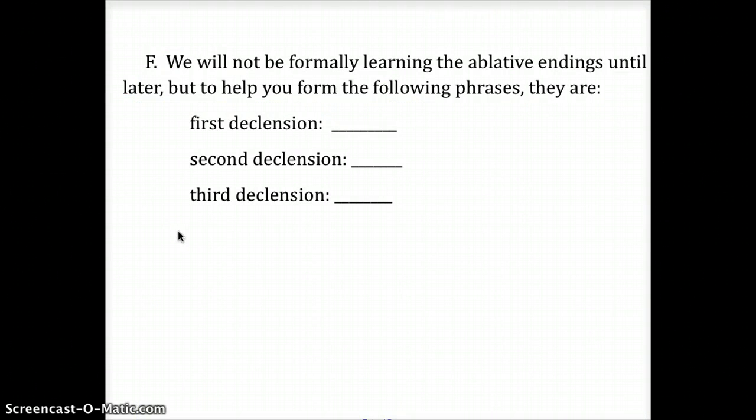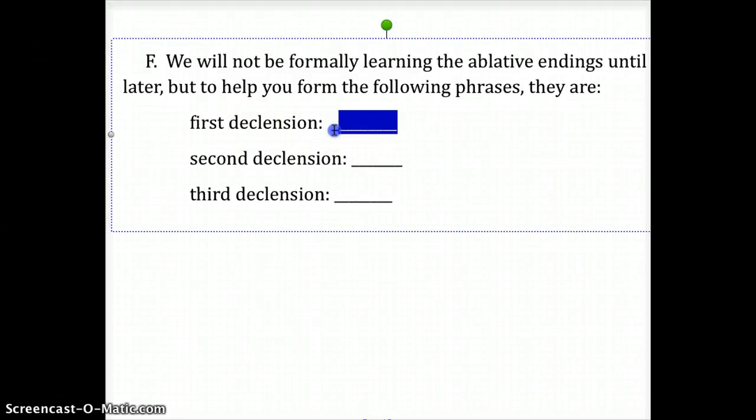So we're not going to formally talk about the ablative case right now, but just for our purposes right now, the ablative endings to help you form these prepositional phrases are: in the first declension, it's the letter A with a macron over it, a long mark like so. In the second declension, it is a long O like so, and in the third declension, the ending is simply the letter E.